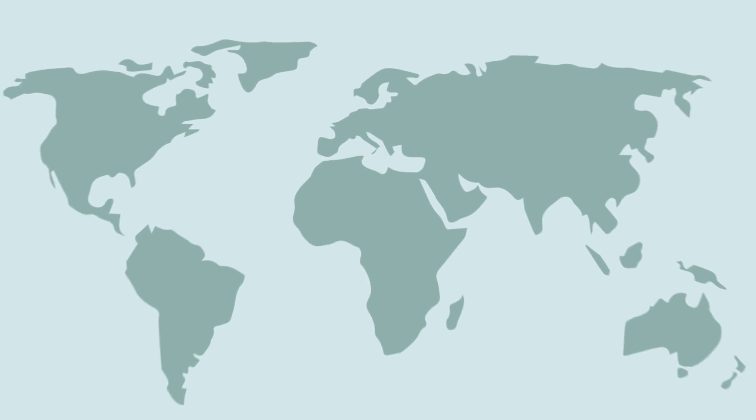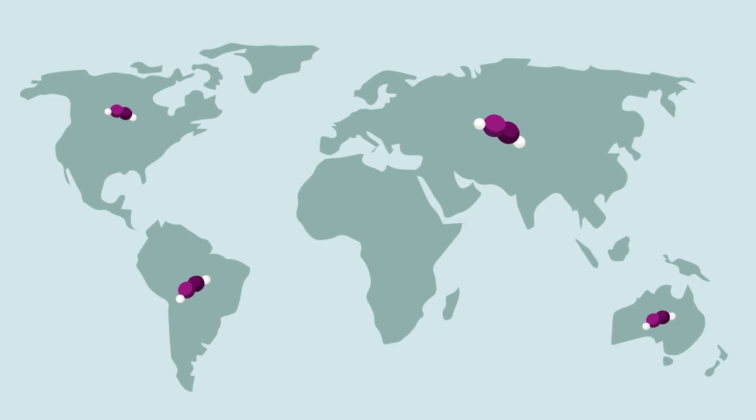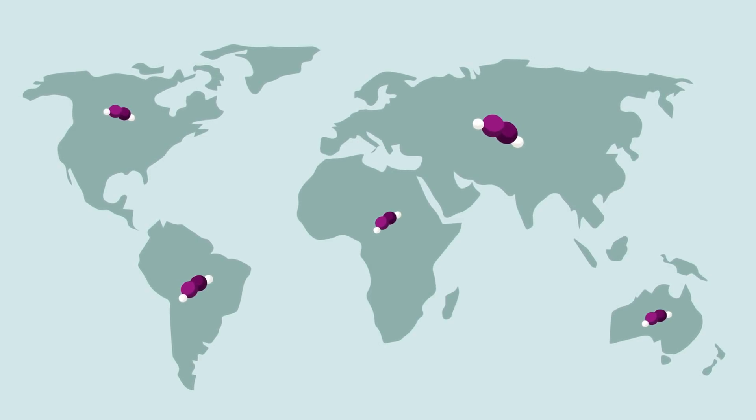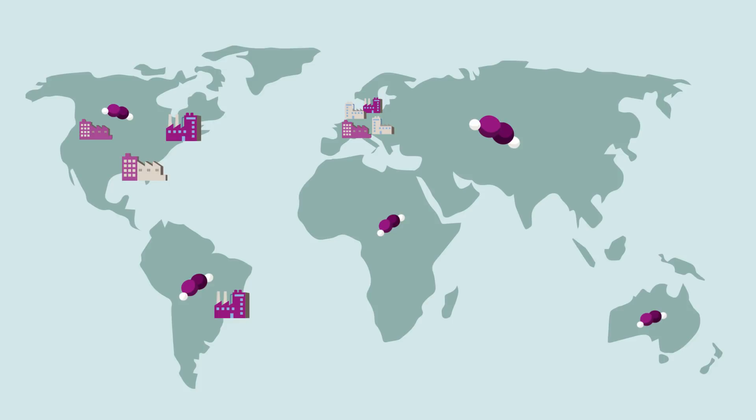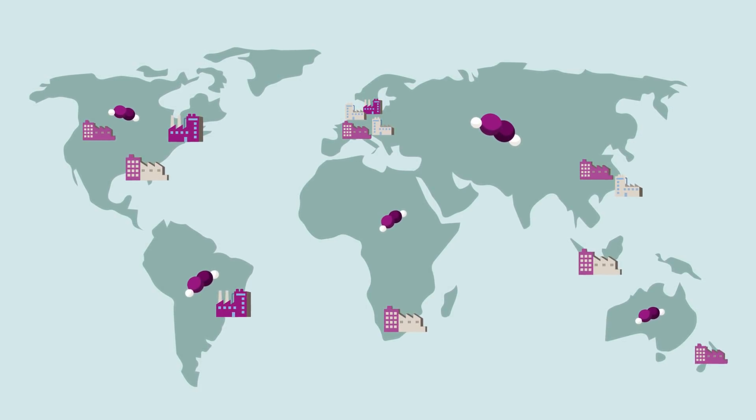Evonik has hydrogen peroxide production facilities at 13 locations around the world, in Europe, North and South America, Africa, Asia, and Oceania.